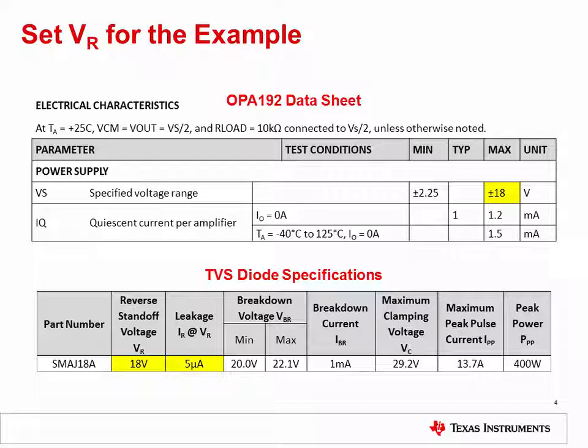Please note the difference between the specified voltage range and absolute maximum range of an op amp's power supply. The specified voltage range is the range where the specs are valid and the range under which the device is designed to operate. The absolute maximum range is the range that can be applied to the device before damage is caused. In this example, we are discussing the specified range of plus or minus 18 volts. The absolute maximum for this device is plus or minus 20 volts.